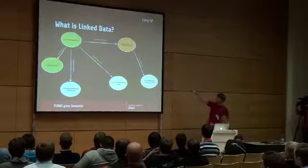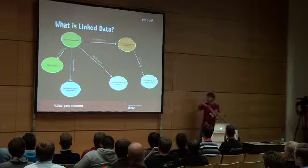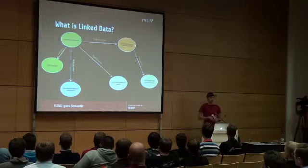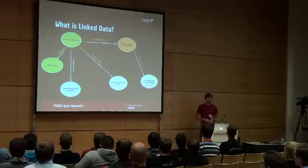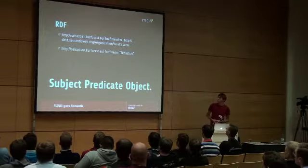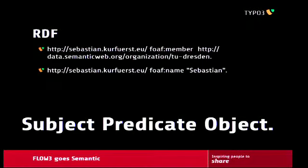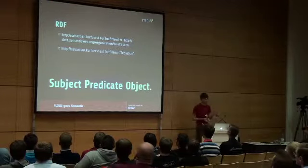There is one technical detail: if we take one edge — for example, Sebastian is a member of TU Dresden — the graph is hard to work with directly, so there is a format called RDF. It has a syntax called a triple. The first part is called the subject, the predicate, and the object — just a normal sentence structure. How it is stored in a computer is a list of such triples: for example, Sebastian Kurfürst EU is member of TU Dresden, or Sebastian Kurfürst EU has the name Sebastian.